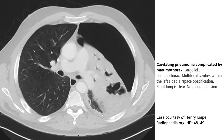Another form of pneumonia is what we call cavitating pneumonia complicated by pneumothorax. We can see a large left pneumothorax with multifocal cavitation between the left-sided aspects of consolidation. The right lung is clear.